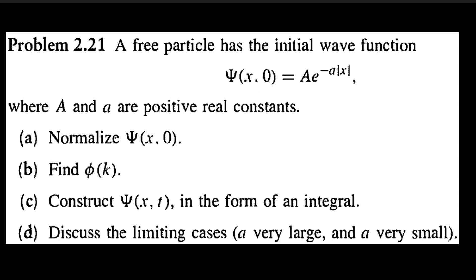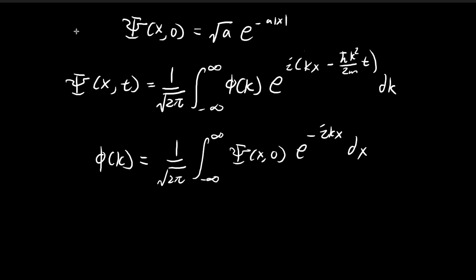Now let's move on to part b. In part b we're asked to find ξ(k). Recall that in part a we found that the constant attached to the initial wave function is the square root of a. Now we're being asked to find ξ(k), which is a component in our solution to the Schrödinger equation. This is the complete solution for the case of a free particle, and in order to arrive at this solution you need to find what ξ(k) should be.